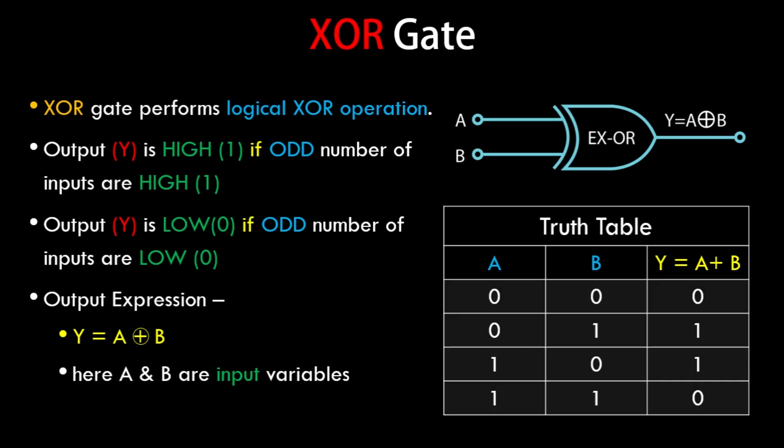Here's the truth table for XOR. The output is high when an odd number of inputs are high: in cases 2 and 3, only one input is high so the output is 1. In the first case both inputs are 0, so output is 0. In the last case both inputs are high — that is an even number — so the output is also 0.